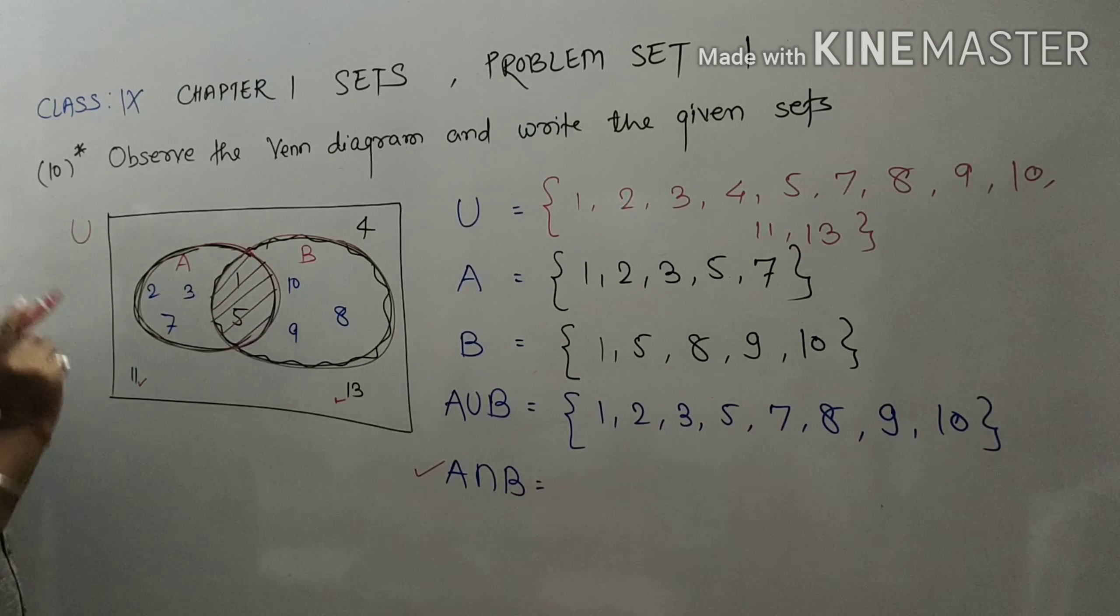So write 1, 2, 3, 5, 7, 8, 9, 10. So this is A union B. While finding A union B, you will write all the elements of set A and set B without any repetition.